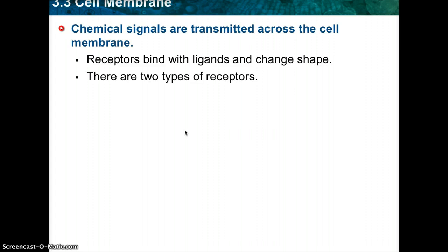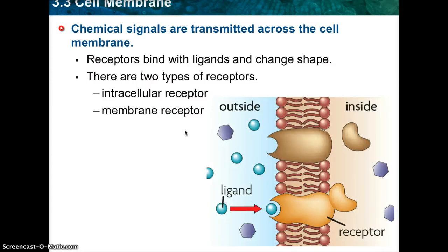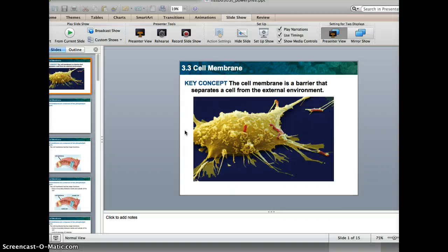Chemical signals are transmitted across the cell membrane. There are receptors that bind with ligands and change shape. There are two types of receptors: intracellular receptors, which are found inside the cell, and membrane receptors, which are found outside of the cell.